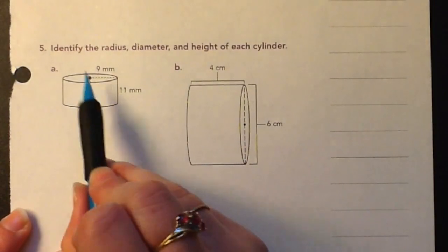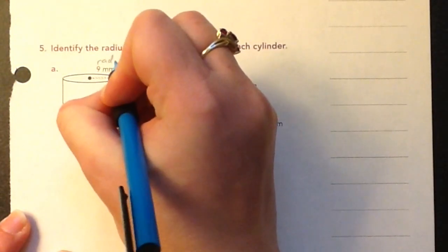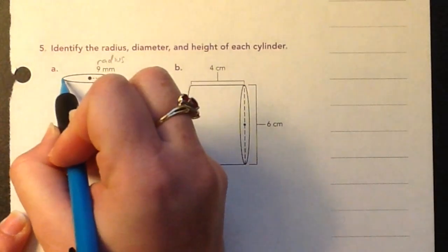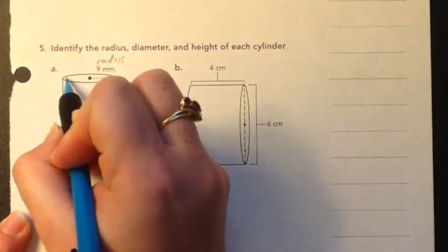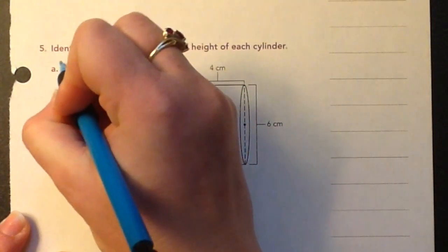So on A, nine is going to be the radius. The diameter is going to be the entire thing. So the whole thing across is going to be the diameter.